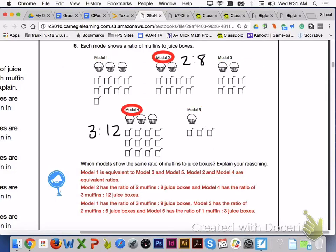And Model 2 and Model 4 are equivalent because Model 2 has a ratio of 2 to 8, and Model 4 has a ratio of 3 to 12.